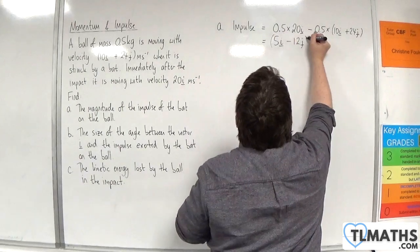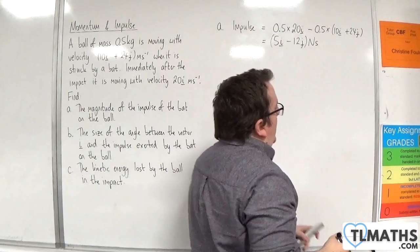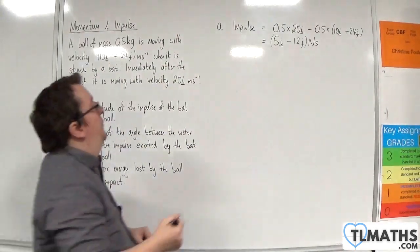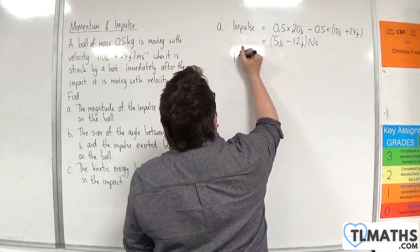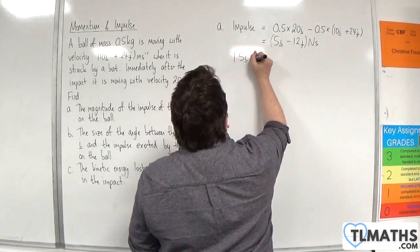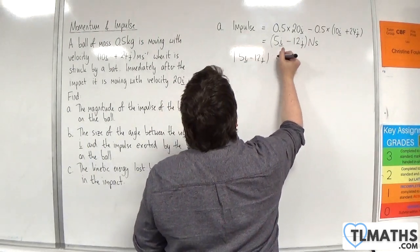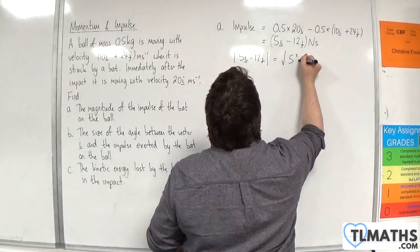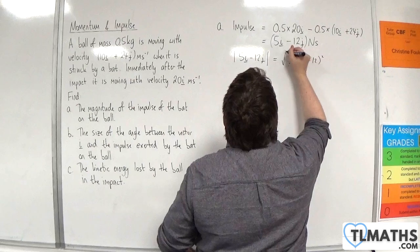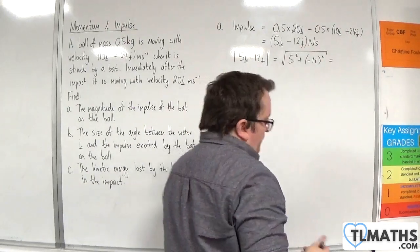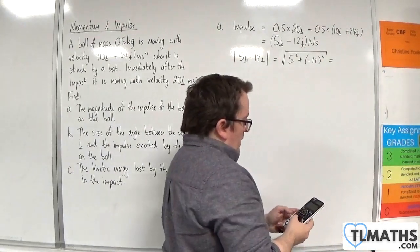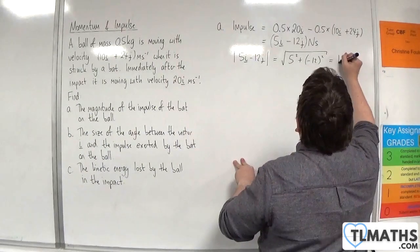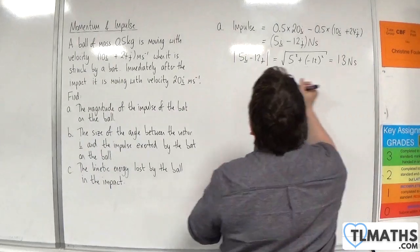Okay so that's in seconds. And we are looking for the magnitude of the impulse. So the magnitude of 5i take away 12j is equal to the square root of 5 squared plus minus 12 squared. So that's a Pythagorean triple. So that's 13 newton seconds.